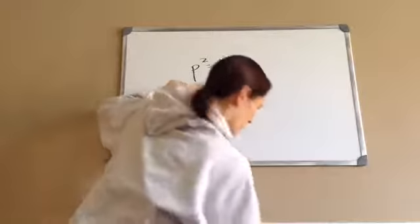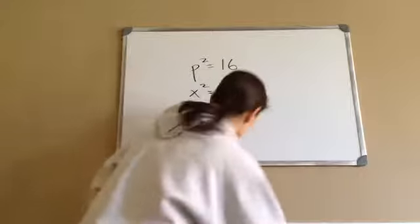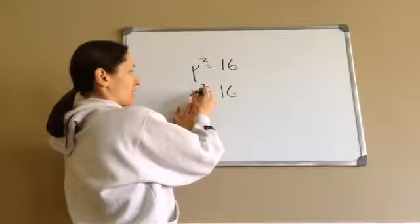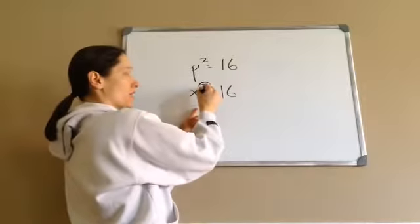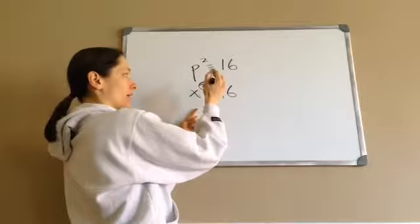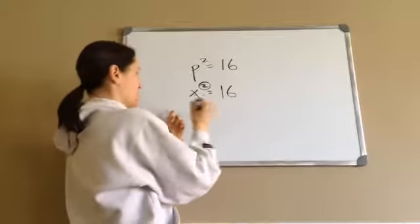Well, with squares, what you do is in order to get the X by itself, this square, what's the opposite of squaring it is square rooting it. So for example,